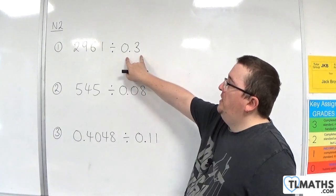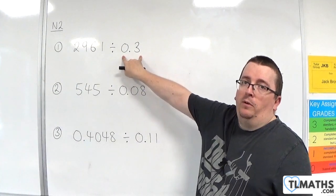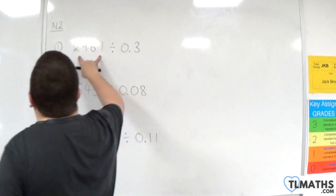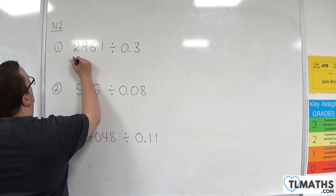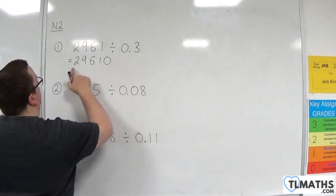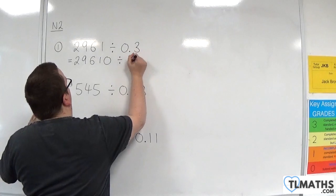We take a look at what we're dividing by first. In order to remove the decimal, I'm going to have to multiply through by 10. That means I need to multiply that through by 10 as well. So this will become 29,610 divided by 3.